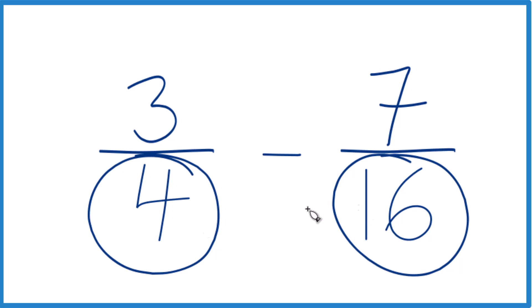Right now we have 4 and 16. But if we had a common denominator, then we just deal with the numerator, bring the denominator across, and we'd be done.